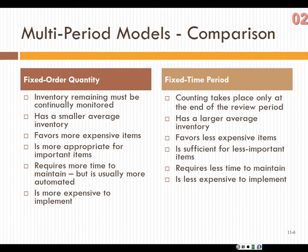Here's a comparison between fixed order quantity versus fixed time period. In fixed order quantity, inventory remaining must be continually monitored — every time you use inventory, you're checking whether you need to order more. It has a smaller average inventory because you're constantly checking. It is more useful for more expensive items, more appropriate for more important items, requires more time to maintain, is usually more automated, and is more expensive to implement.